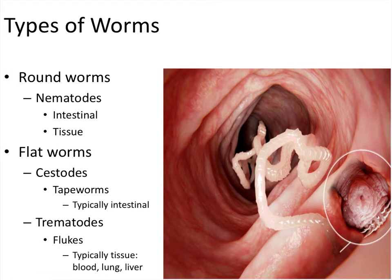Just as a quick refresher, because it has been a while since we talked about this: remember that the helminths are the infectious worms and flukes. There are lots of different types of worms in the world. Not all of them are infectious — most of them are not — but some of them are, and those that are infectious are considered helminths. Within the helminths, there are two main types.